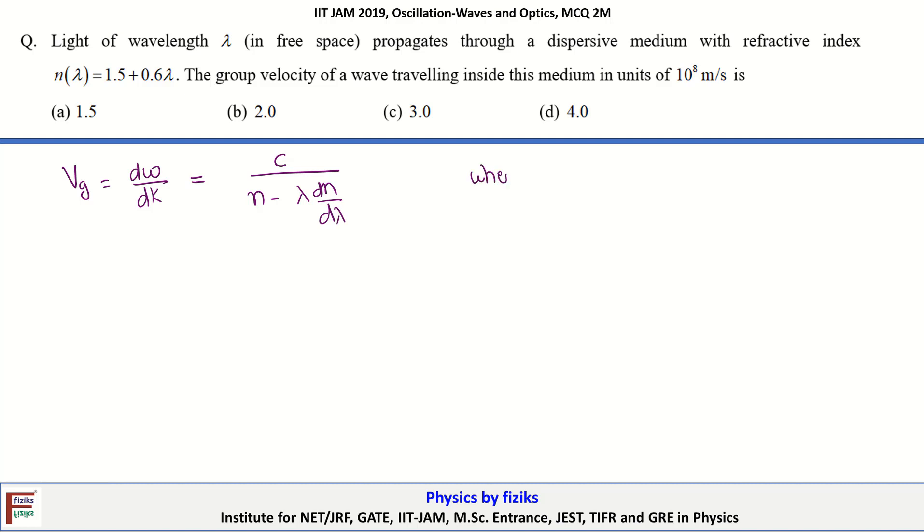We already have an expression n equal to 1.5 plus 0.6 lambda. We can differentiate with respect to lambda. This will be equal to 0.6.